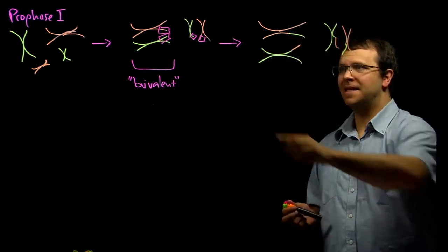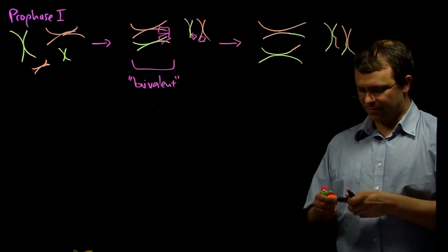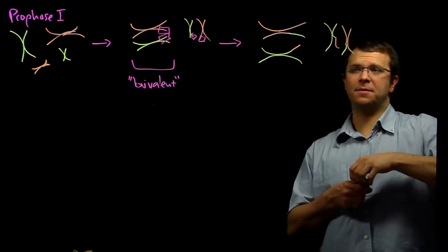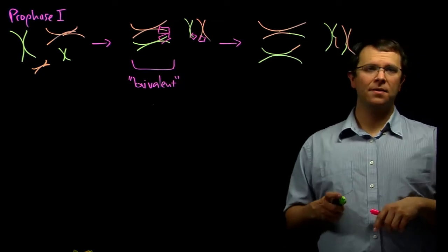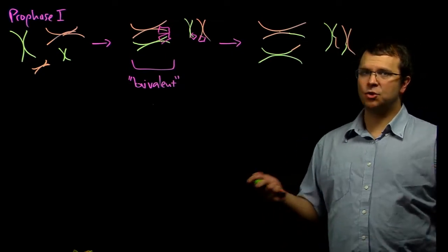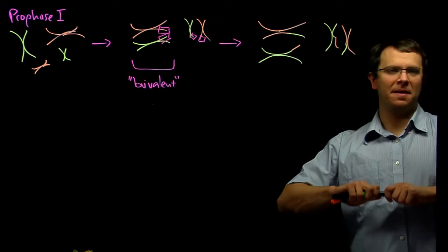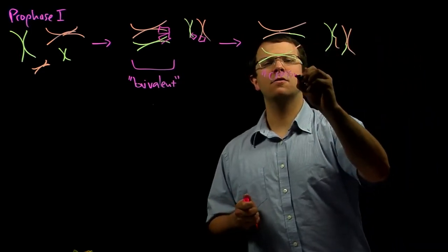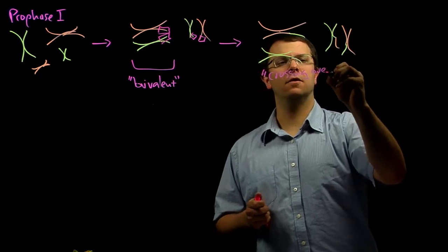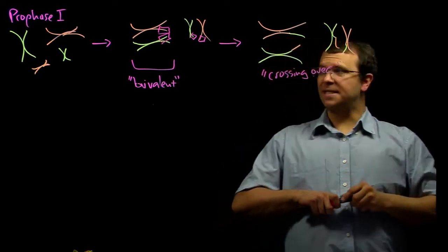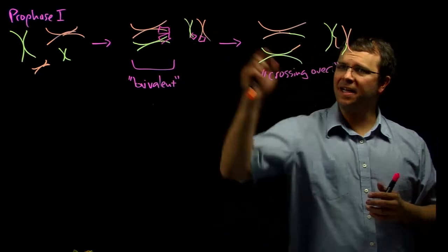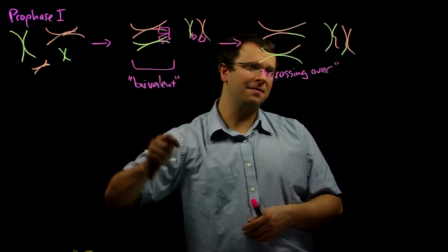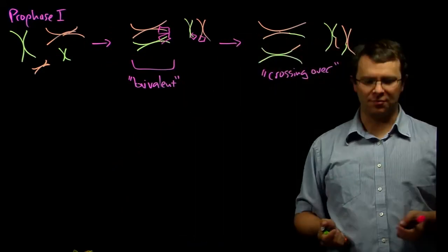And so these two little pieces have swapped with each other as well. We call this process of homologous chromosomes swapping pieces and parts with each other, we call this crossing over. And so the bivalents lining up and homologous chromosomes crossing over, we're all still happening here in prophase one.